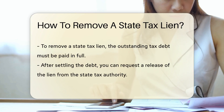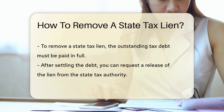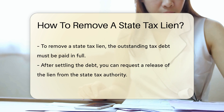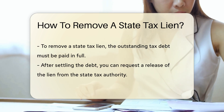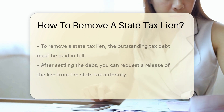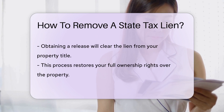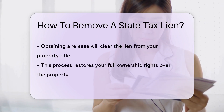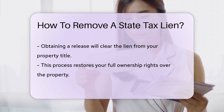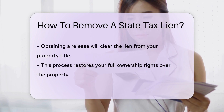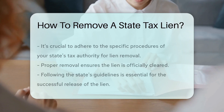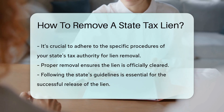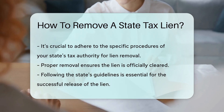To remove a state tax lien, you typically need to pay off the outstanding tax debt in full. Once the debt is settled, you can request a release of the lien from the state tax authority. This release will clear the lien from your property title, allowing you to regain full ownership rights. It's important to follow the specific procedures outlined by your state's tax authority to ensure the lien is properly removed.